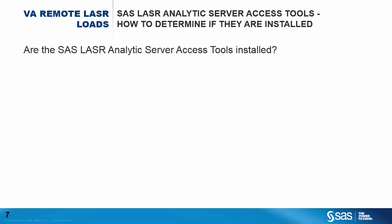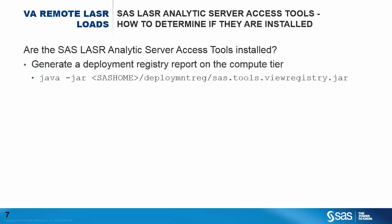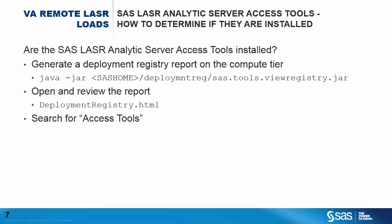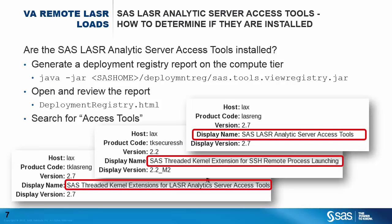Now that you've seen how these tools may benefit you, you may be asking how you can determine if you have them installed on your source environment. The process is pretty simple. First, generate the Deployment Registry report using the command below; the JAR file can be found in the Deployment Registry directory of SAS Home. This will generate a text file and an HTML file. Second, open the report using either a text editor or a browser. Third, search for 'access tools' — you should find two components indicated by product codes lasereng and tklasereng. Then search for tksecure ssh. Combined, these three components make up the LASR server access tools. If you find them, you already have them installed.